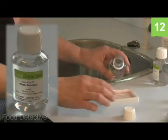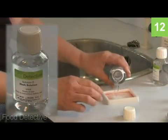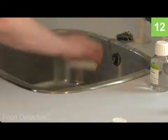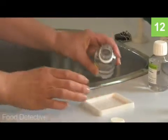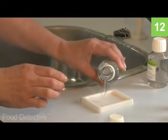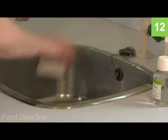Pour some of solution D into the tray so that the entire surface is flooded. Agitate vigorously for a few seconds to wash, then empty the tray into the sink. Repeat this washing step three more times. Drain the tray thoroughly before proceeding to the next step.